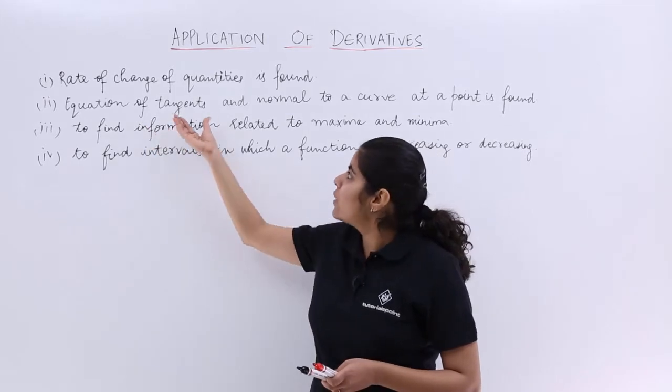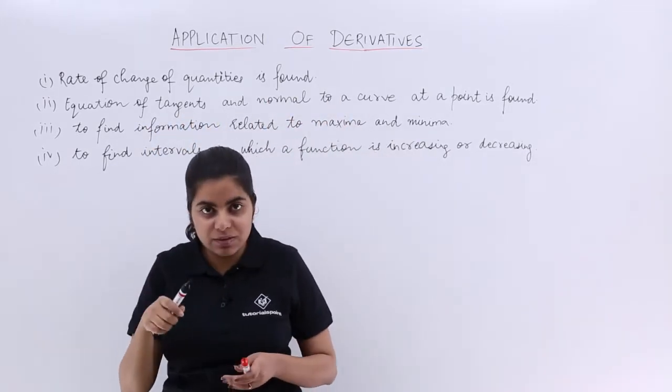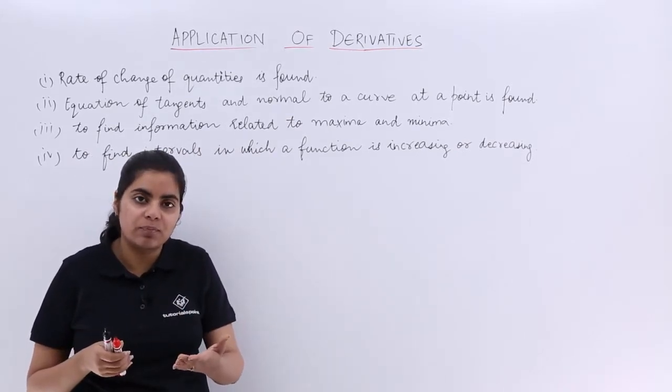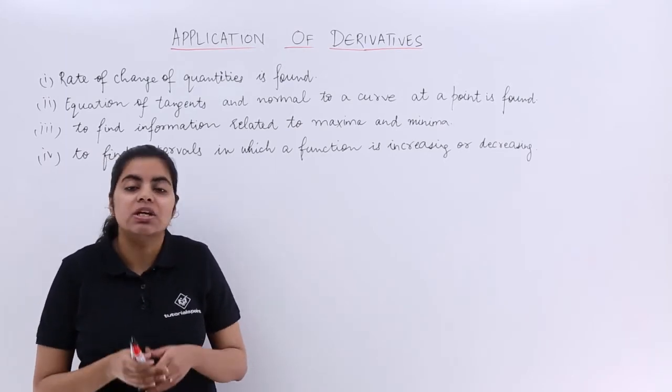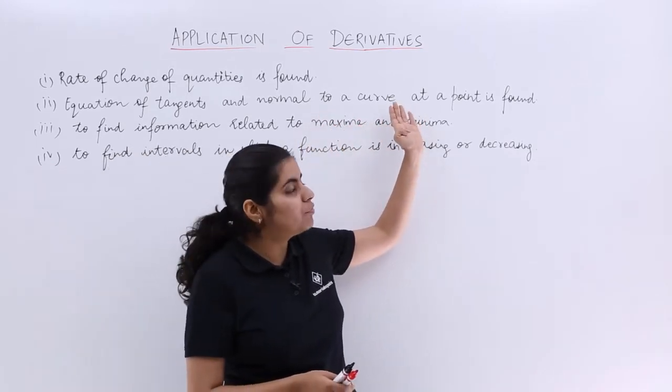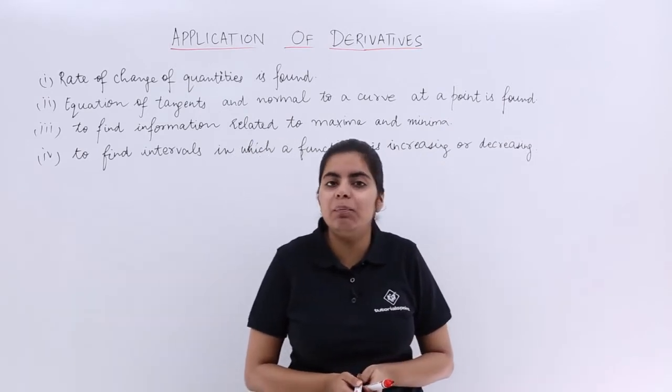The next is what? Equation of tangents and normals to a curve. Suppose a curve is given and you need to find out the equation of the tangent or the normal or both. All these things can be found out using the derivatives. So that is a very important application of derivative. It says that equation of tangent and normal to the curve at a point can be found with the help of derivatives.